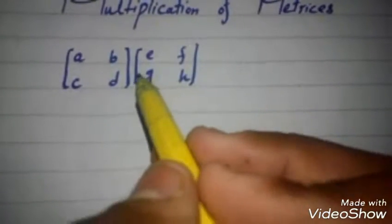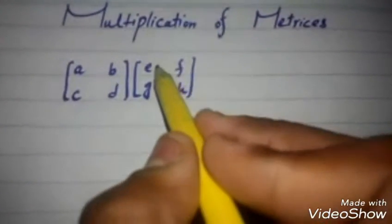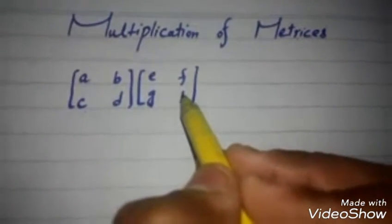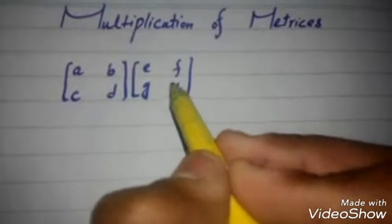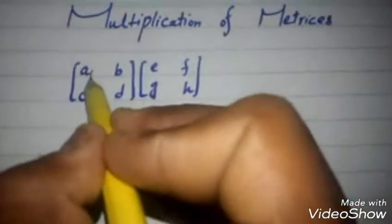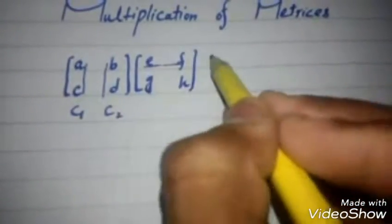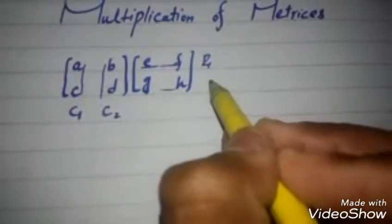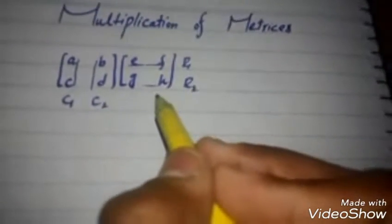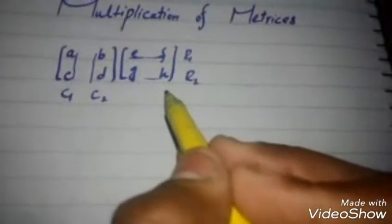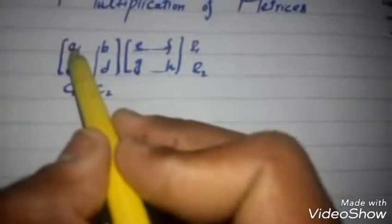Before solving, we should check that the number of columns in matrix 1 and the number of rows in matrix 2 are equal. If they are equal, multiplication is possible; otherwise it is not. Here C1 and C2, R1 and R2 — they are equal: two rows and two columns, their orders are the same, so we can multiply.